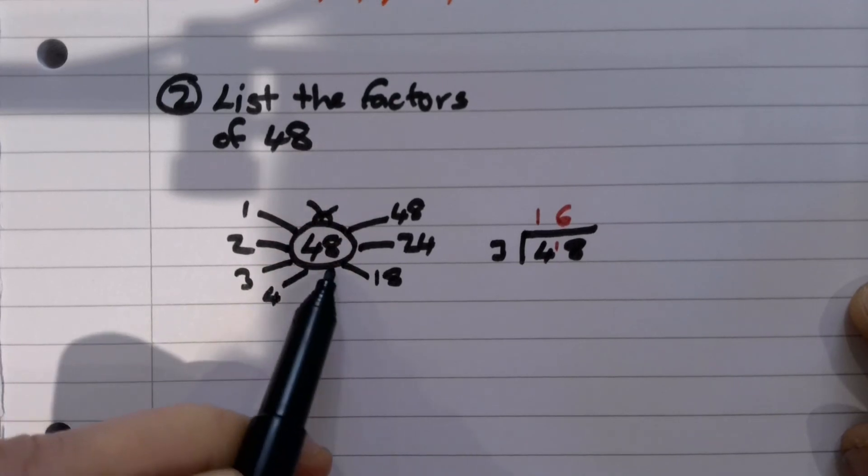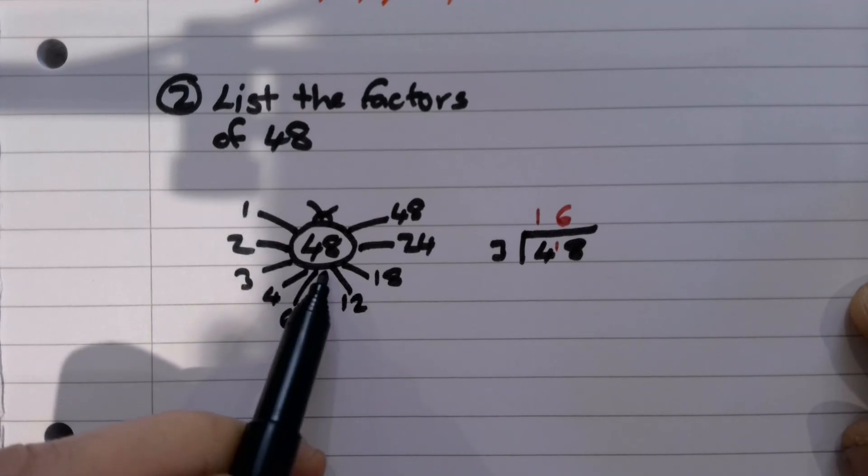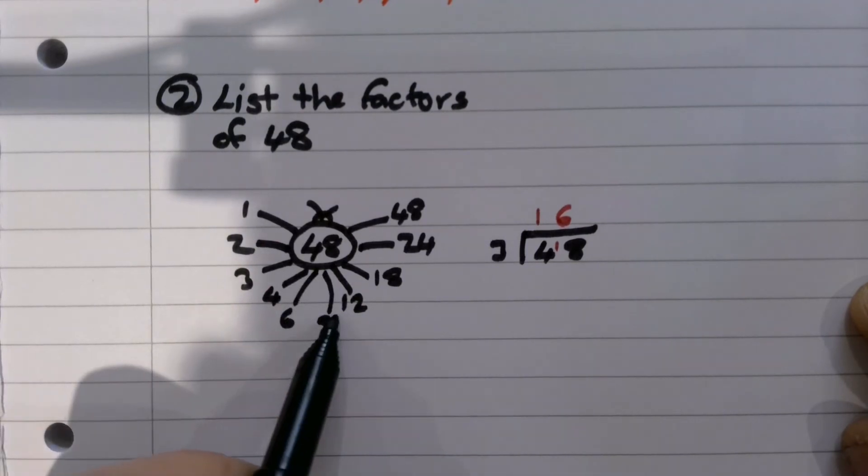Four fours, yeah, that's going to go 12 times. Five, no. Six, yep, six times eight. So there are all the factor pairs. That's our factor bug done. We just need to list them small to big.